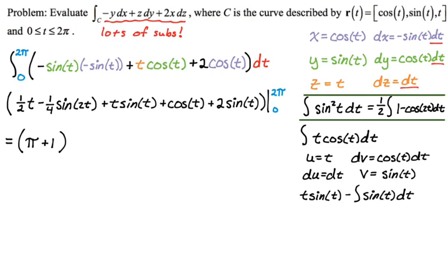When we plug in zero, sine of zero is zero. So everything with a sine goes away. One half times zero is zero, cosine of zero is one. So we get minus the quantity of one. And then overall, that's actually just pi. So the line integral we're evaluating just gives us pi overall.